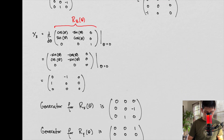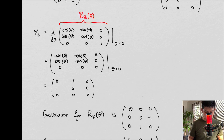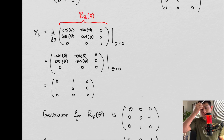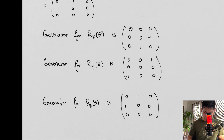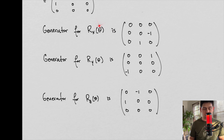We can do the same exact thing for our third generator. We have three generators. For our third generator, we have rotation in our z-plane. This is what our rotation in z looks like. Setting our parameter equal to zero, we get this. So: a generator for a rotation in x looks like this, a generator for a rotation in y looks like this, and a generator for a rotation in z looks like this.